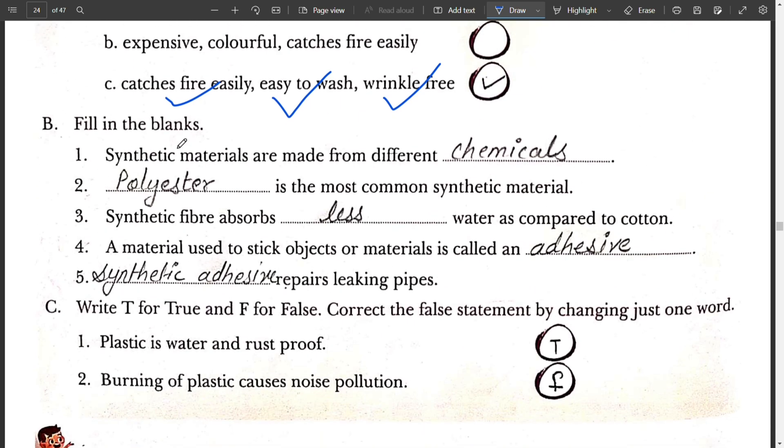Fill in the blanks. Synthetic materials are made from different chemicals. Polyester is the most common synthetic fiber. Synthetic fiber absorbs less water as compared to cotton. A synthetic material is used to stick object or material is called an adhesive. Fifth, synthetic adhesive repairs leaking pipes.